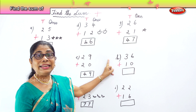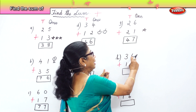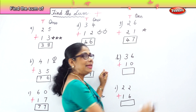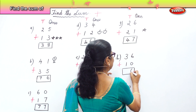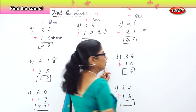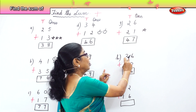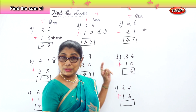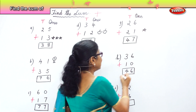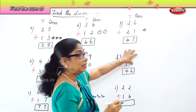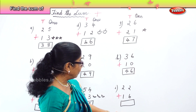Find the sum of thirty-six and ten. Any number plus zero is the number itself, so six plus zero is six. Three tens plus one ten is four tens. The sum of thirty-six plus ten is forty-six.